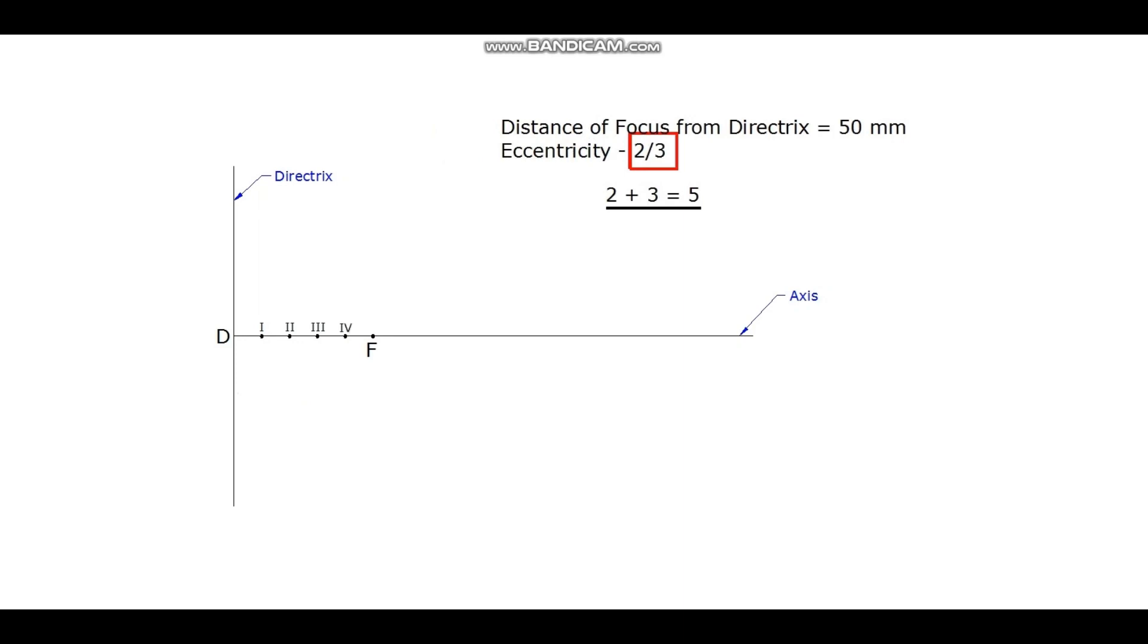Our next step is to locate the vertex point V. Since the eccentricity ratio is 2 by 3, vertex point V is to be marked by taking 2 parts from F. Remaining 3 parts will be there from D to V.